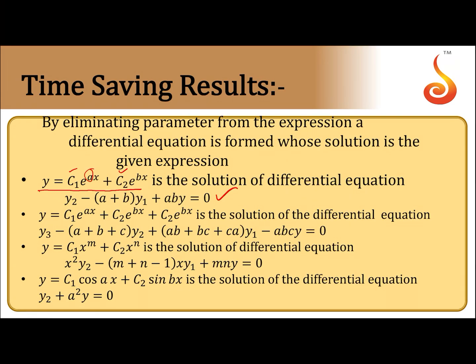Time-saving results: if a and b are roots of a quadratic, you can write y₂ − (a+b)·y₁ + ab·y = 0. For three roots a, b, c: y₃ − (a+b+c)·y₂ + (ab+bc+ca)·y₁ − abc·y = 0. When y = c₁xᵐ + c₂xⁿ, the differential equation is x²y₂ − (m+n−1)x·y₁ + mn·y = 0.